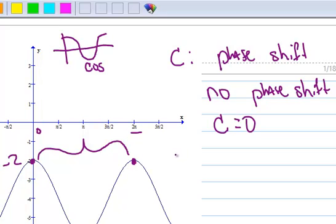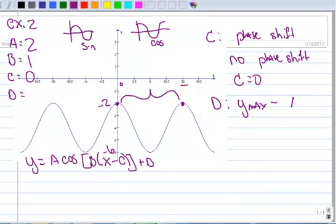Now let's calculate D, our vertical shift. It's obvious there is a vertical shift, but let's calculate it. The formula is Y max minus A. So our Y max is negative 2 minus our A, which is 2. If you calculate that out, you get negative 4. So our D is negative 4.